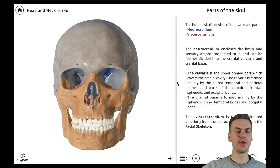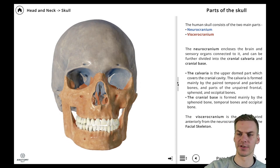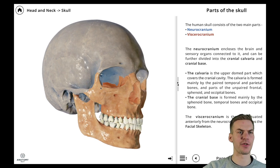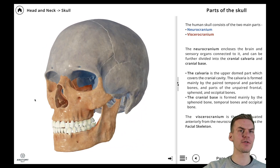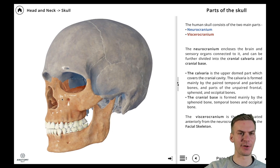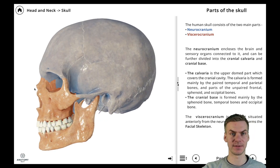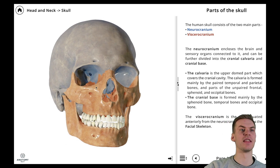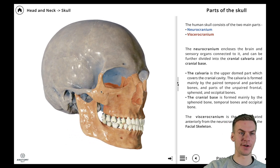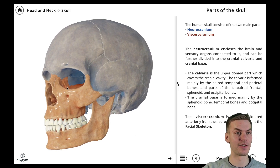The human skull consists of two main parts: the neurocranium, color-coded here in blue, and the viscerocranium, color-coded here in orange. The neurocranium encloses the brain and sensory organs connected to it, and it can be further subdivided into the cranial calvaria and the cranial base. The viscerocranium is the part located anterior to the neurocranium and it forms the facial skeleton.